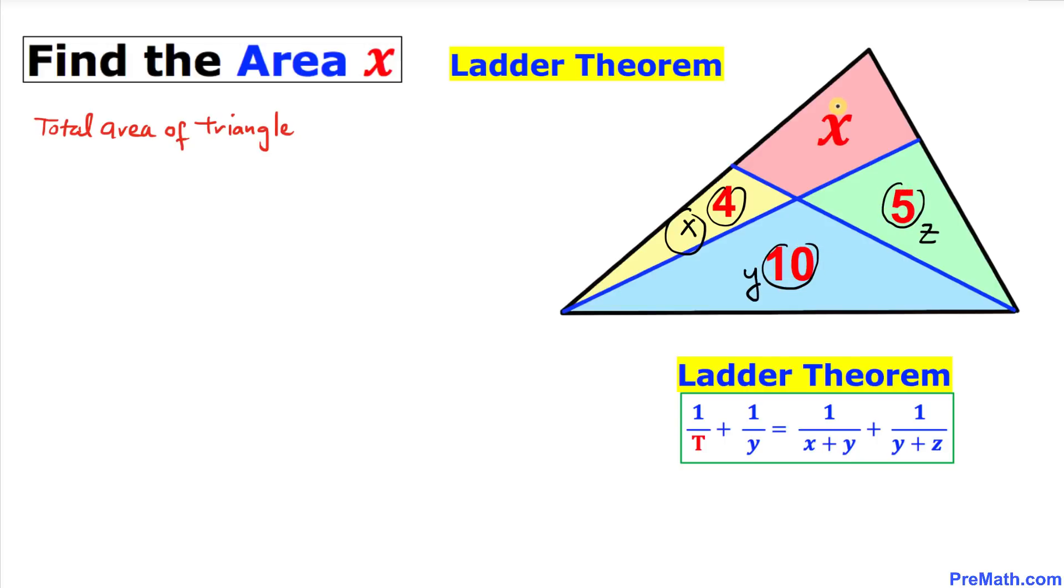Then the total area of this big triangle is going to be this one x which is 4, plus y is 10, plus this z is 5, and this quadrilateral which is x.